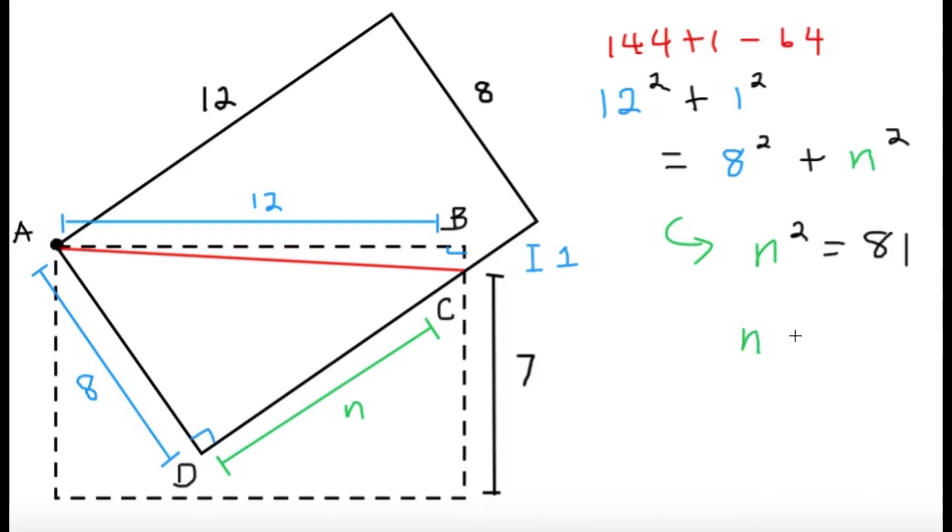And having this is nice because we can easily solve for n, take the square root of both sides, n equals technically plus minus 9, but we only want a positive root here since we're talking about side lengths. So we have n equals 9.